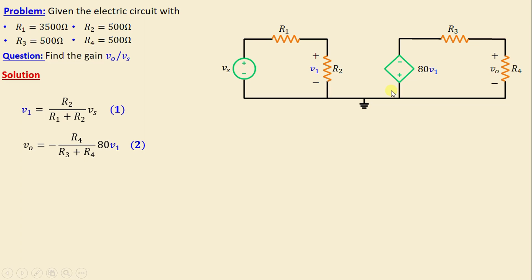By substituting equation 1 into equation 2, we obtain vo = -80 × R4/(R3 + R4) × R2/(R1 + R2) × vs.